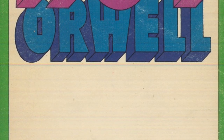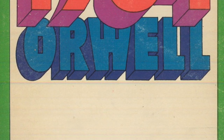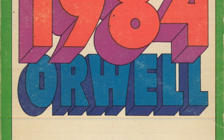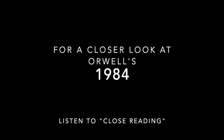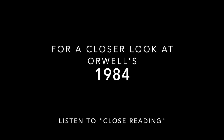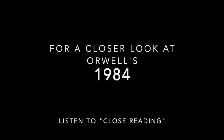Now that you've got an overall idea of what utopian fiction is, please join me for an episode of Close Reading. I'll read and analyze a short section from Chapter 5 of George Orwell's 1984. This closer look at 1984 will give you a better idea of the kinds of concerns and narrative features common to this genre.